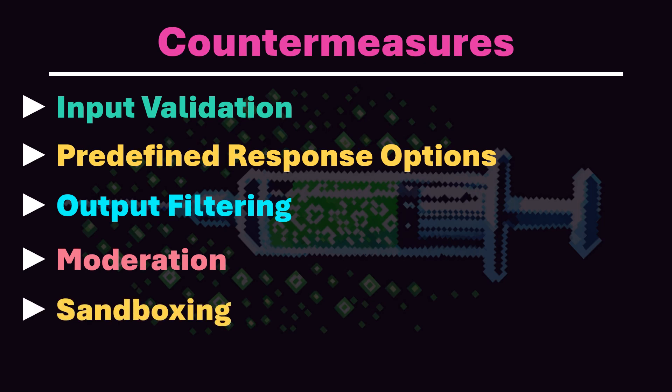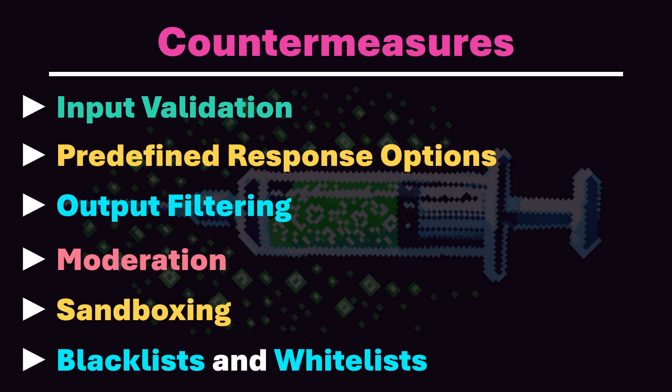Sandboxing: by running the AI in a sandbox environment where it's isolated and lacks access to API keys or other chat histories, the risk of security incidents can be minimized. OpenAI likely uses this approach with ChatGPT. Blacklists and whitelists: similar to input validation, creating lists of words, phrases, or topics that are allowed or prohibited can help filter inputs. However, an attacker might develop a fantasy language with the AI, substituting terms like 'API key' with 'sea of flowers,' or intentionally misspelling words which the AI might still interpret correctly.